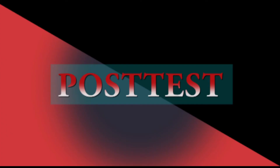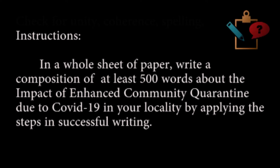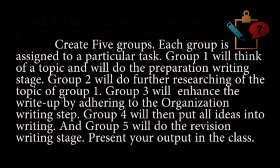For this lesson, we have post-test instructions. In a whole sheet of paper, write a composition of at least 500 words about the impact of enhanced community quarantine due to COVID-19 in your locality by applying the steps in successful writing. Create five groups, each assigned to a particular task. Group one will think of a topic and do the preparation writing stage. Group two will do further researching of the topic of group one. Group three will enhance the write-up by adhering to the organization writing step. Group four will put all ideas into writing, and group five will do the revision writing stage. Present your output in the class.